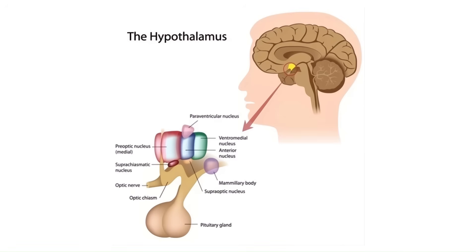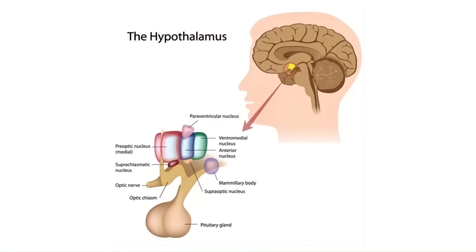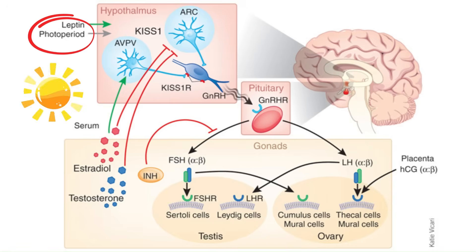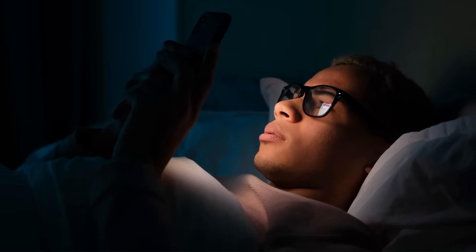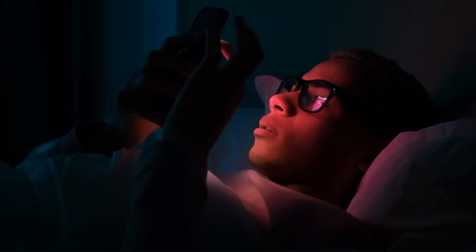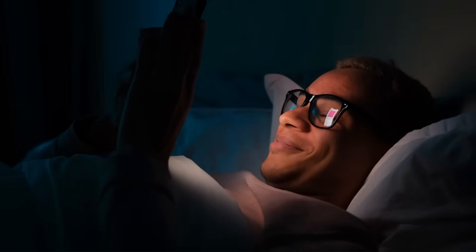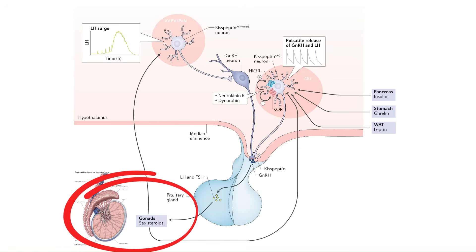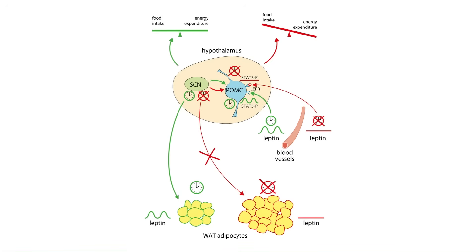Your circadian rhythm is another big influence on kisspeptin. There's a region in your hypothalamus called the suprachiasmatic nucleus which receives light signals from the eyes and synchronizes the brain and body with the external light environment — it's the master regulator of your internal biological clock. Kisspeptin neurons, like most things in the body, are controlled by the circadian rhythm. If your sleep is irregular or you're exposed to bright blue screens at night, your kisspeptin signaling and testosterone production will be disrupted.